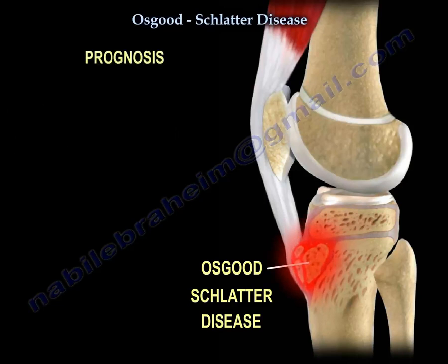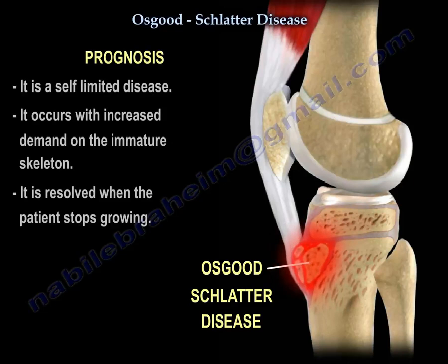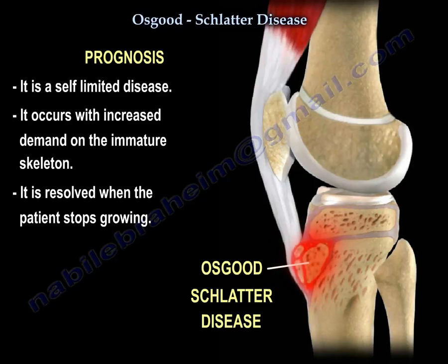Prognosis: Osgood-Schlatter disease is a self-limited disease. It occurs with increased demand on the immature skeleton and is resolved when the patient stops growing.